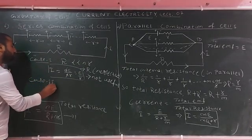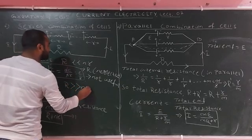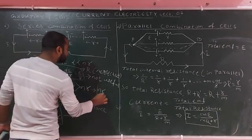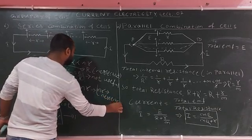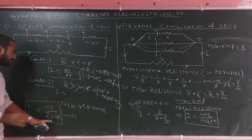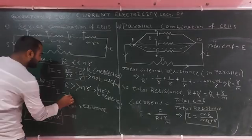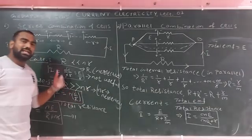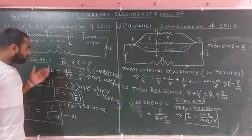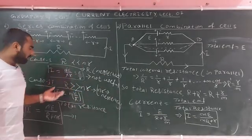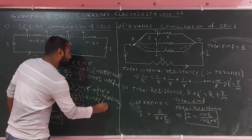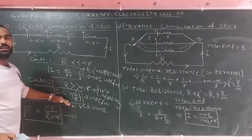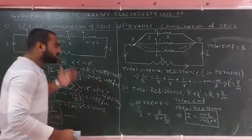Case 2: external resistance is very much greater than the total internal resistance. In this case, we neglect the total internal resistance, putting nR equal to zero. So I equals nE divided by R. The current depends on the number of cells n, meaning more cells give more current. Therefore, series combination is useful when external resistance is very large compared to total internal resistance. Otherwise it is not useful. This is the series combination of cells.